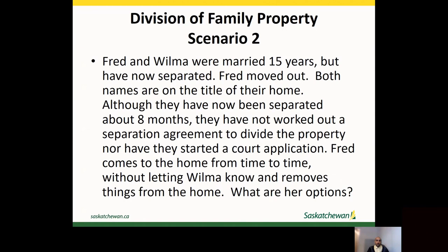In our second scenario, Fred and Wilma were married 15 years but have now separated. Fred moved out. Both names are on the title of their home. Although they have been separated about eight months, they have not worked out a separation agreement to divide the property, nor have they started a court application. Fred comes to the home from time to time without letting Wilma know and removes things from the home. So long as they continue to be married and there is no court order or agreement giving Wilma exclusive possession of the home, Fred can continue coming to the home. Wilma can either try to negotiate a written agreement about who will continue to reside in the home exclusively or whether they will sell the home. If they are not able to work out an agreement, Wilma can apply to the court for an order for exclusive possession of the home.